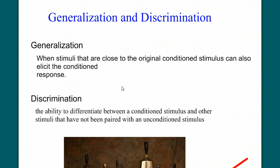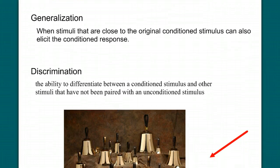Let's look at the concepts of generalization and discrimination. These are two terms that show up in both classical conditioning and operant conditioning. Let's define them here. Generalization. When stimuli that are closest to the original conditioned stimuli can also elicit the conditioned response. What does that mean?